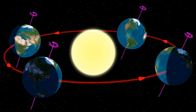In modern times, Earth's perihelion occurs around January 3, and the aphelion around July 4. The changing Earth-Sun distance results in an increase of about 6.9% in total solar energy reaching the Earth at perihelion relative to aphelion.